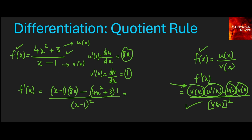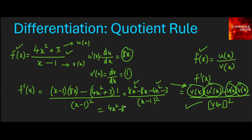This simplifies to 8x² − 8x minus 4x² − 3, all over (x − 1) squared. This can be further simplified: 8x² − 4x² is 4x². The rest remains as is: minus 8x minus 3, over (x − 1) squared. This is the final differentiation of f(x).